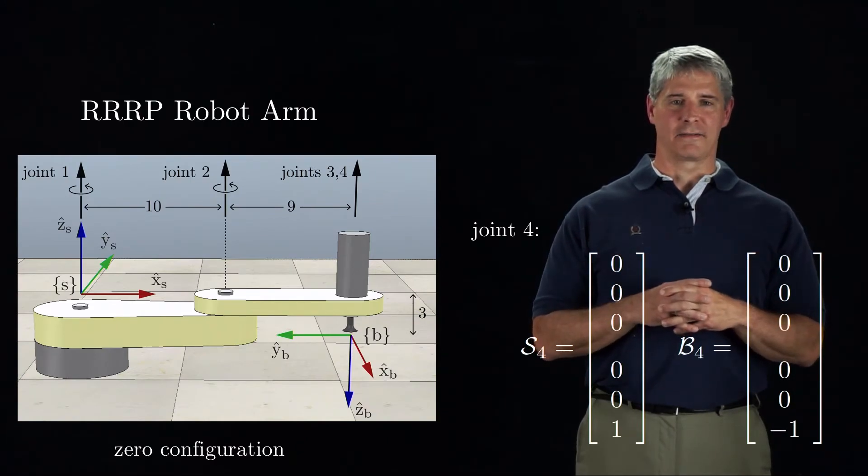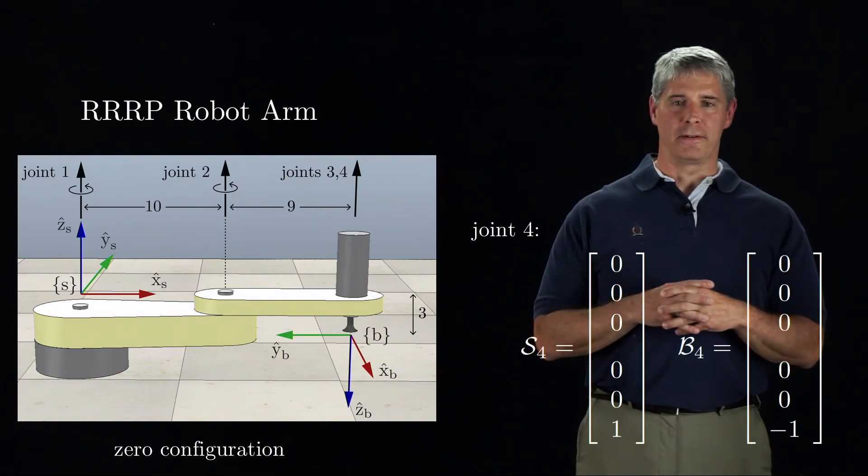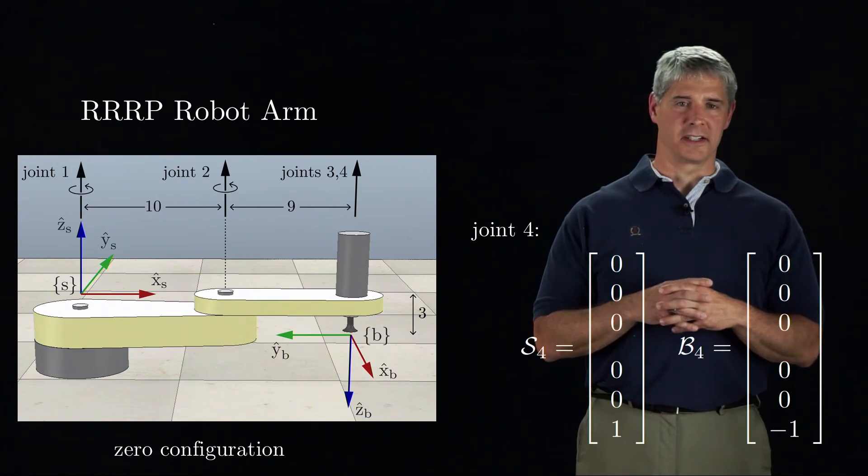Finally, the prismatic axis of joint four is aligned with the z-axis of the S-frame and the minus-Z axis of the B-frame. The angular component of both screw axes is zero, since it is a prismatic joint.